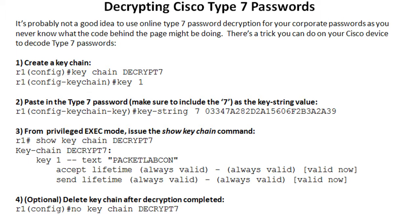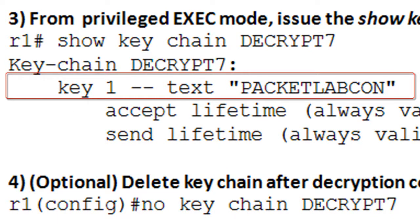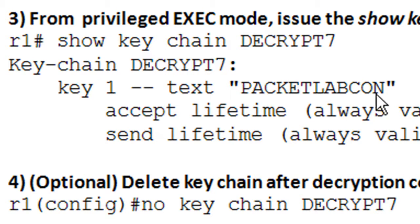There is a way to do this locally on a device — it's a bit roundabout but good to know. You just create a key chain and name it, in this case 'decrypt seven.' Specify the key — key one will be fine. Then take the already encrypted Type 7 string and include the seven when entering the key string, indicating the next bit is a hexadecimal string that's already encrypted. Once you've done that, go to privileged exec mode and issue 'show key chain decrypt seven.' Key one comes back with the plaintext, so you've decrypted the Type 7 password locally — in this case, it was 'packetlab.' Then optionally clean up by issuing 'no key chain decrypt seven.' This stops you from going out to the internet to decrypt your Type 7 passwords.